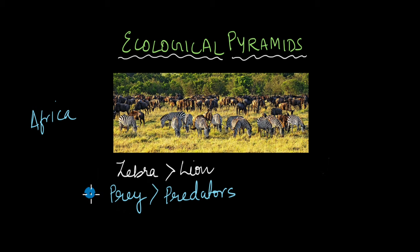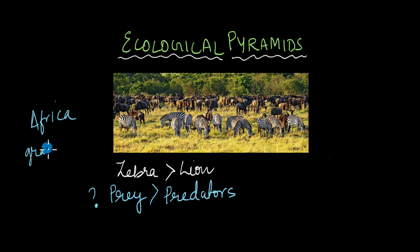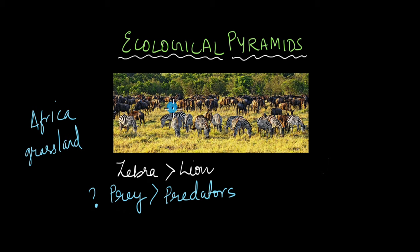What does this tell us? This tells us that there is some sort of relationship between different organisms in this ecosystem, which is a grassland. This is true for every ecosystem on earth — there is some relationship between different organisms in an ecosystem.